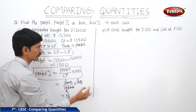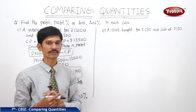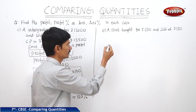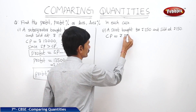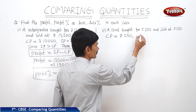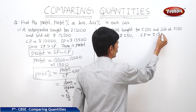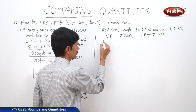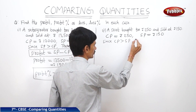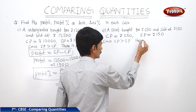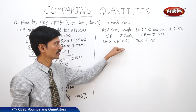Now let us take the second question. A skirt bought for 250 rupees and sold for 150 rupees. The cost price of the skirt is 250 rupees and the selling price is 150 rupees. Since cost price is more than selling price, there is loss.